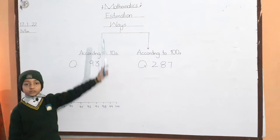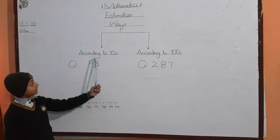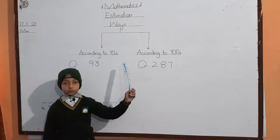There are two ways of rounding off: according to tens, according to hundreds.